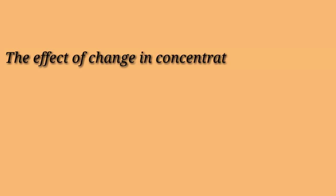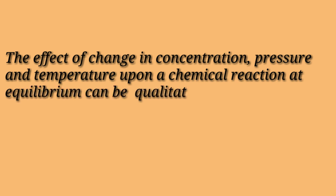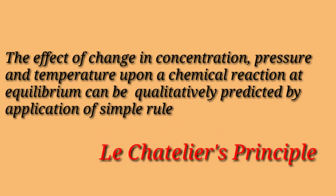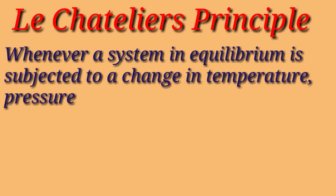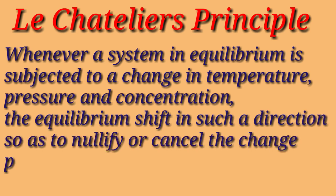The effect of change in concentration, pressure, and temperature upon a chemical reaction at equilibrium can be qualitatively predicted by the application of a simple rule known as Le Chatelier's principle. It states that whenever a system in equilibrium is subjected to a change in temperature, pressure, or concentration, the equilibrium shifts in such a direction so as to nullify or cancel the change produced.